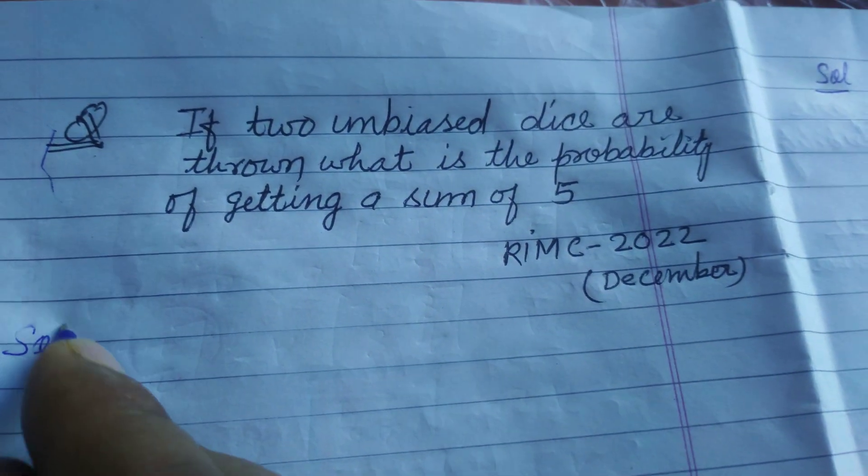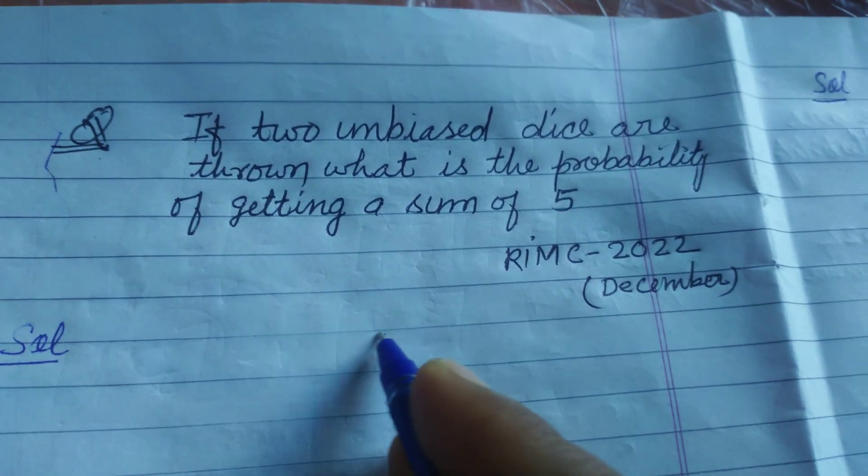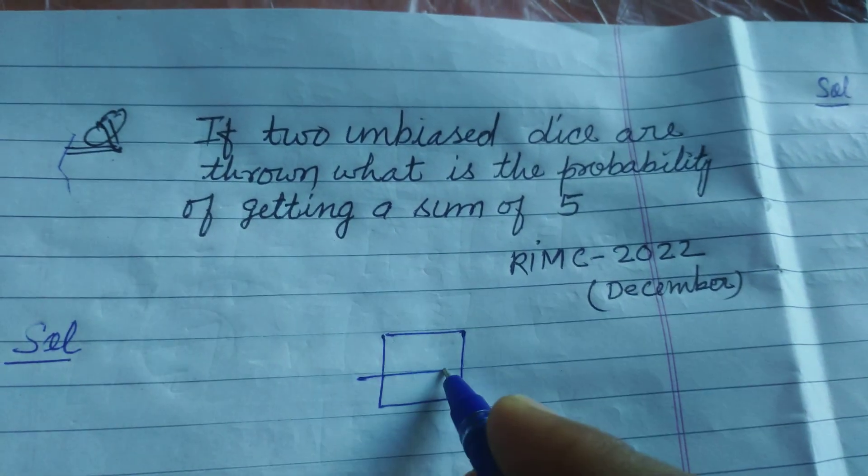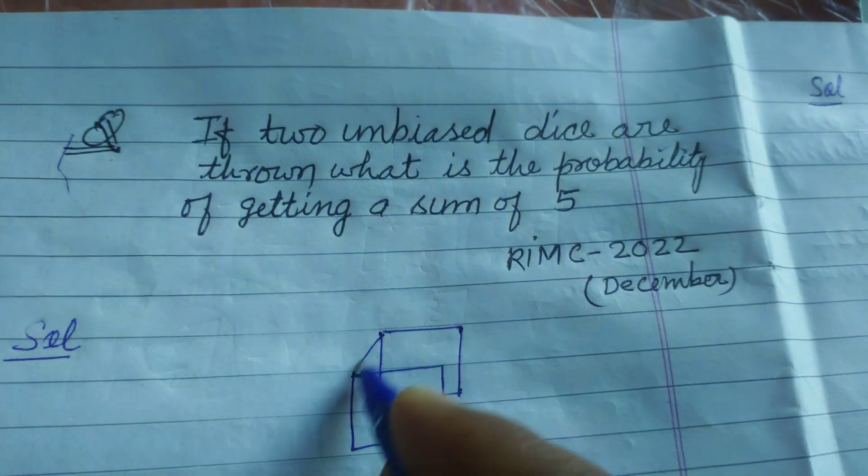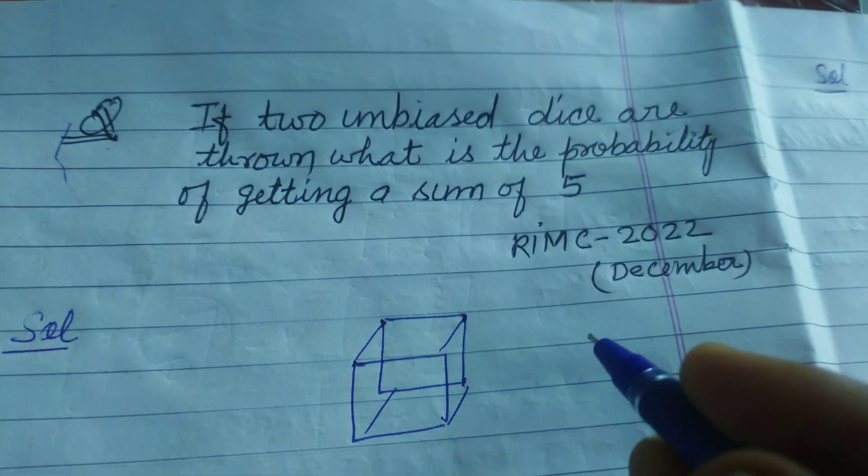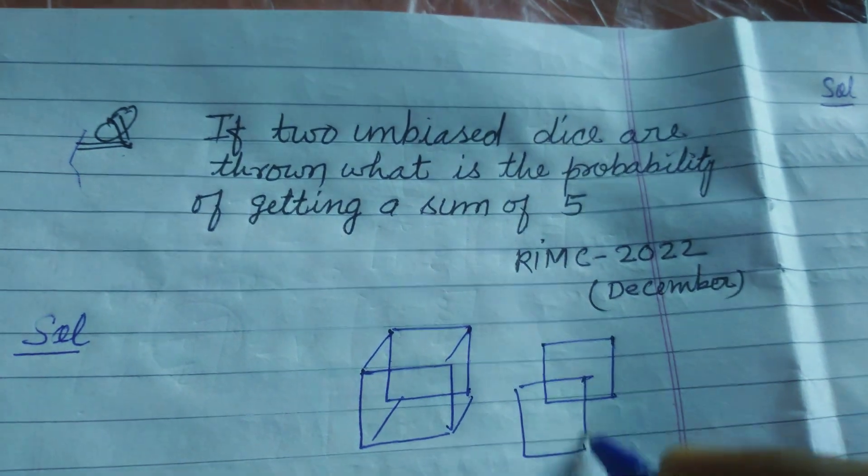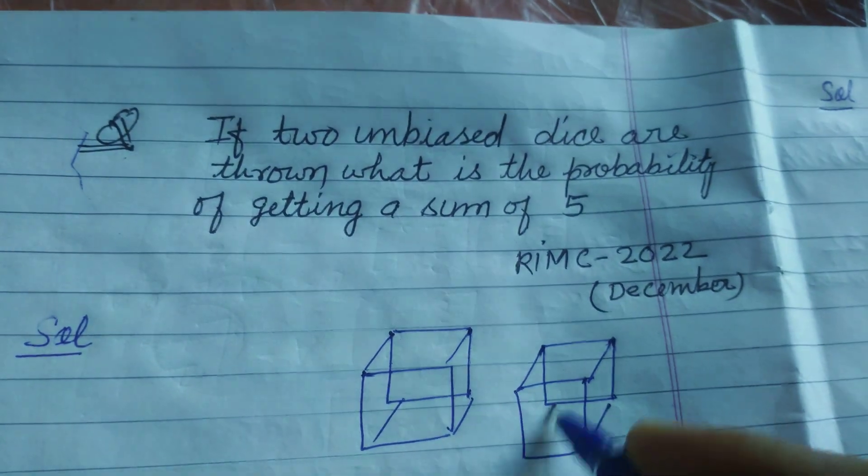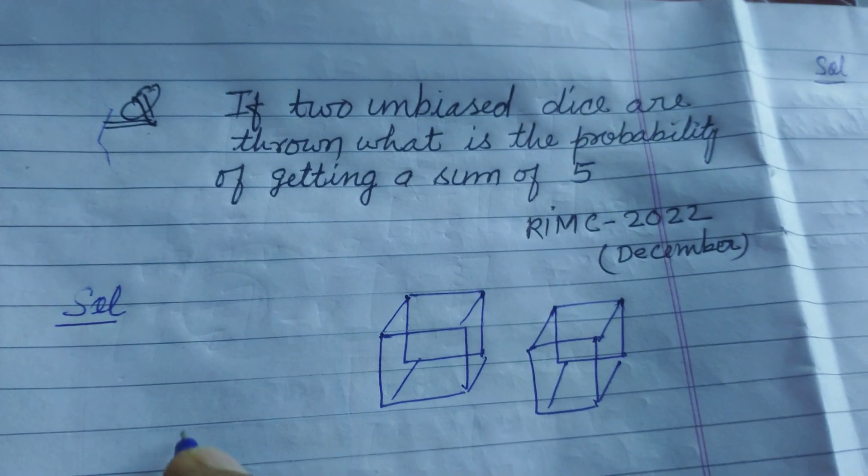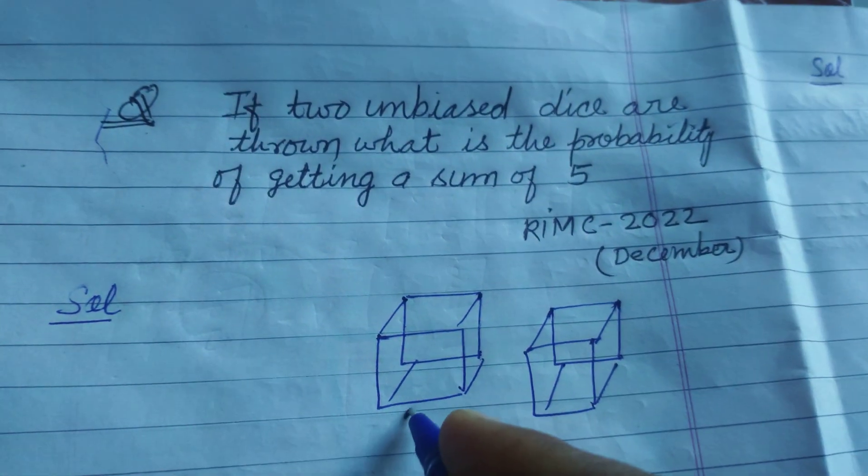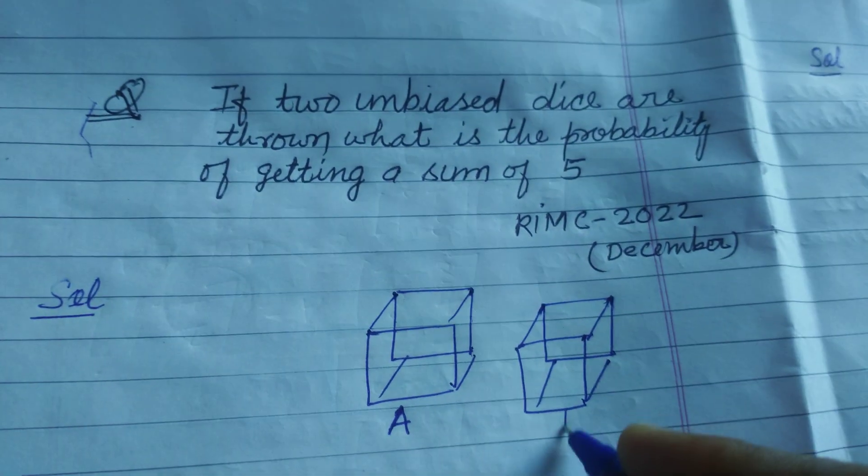So students here, we have two unbiased dice. These are dices. You know that the sample space of a dice, this is dice A and this is dice B.